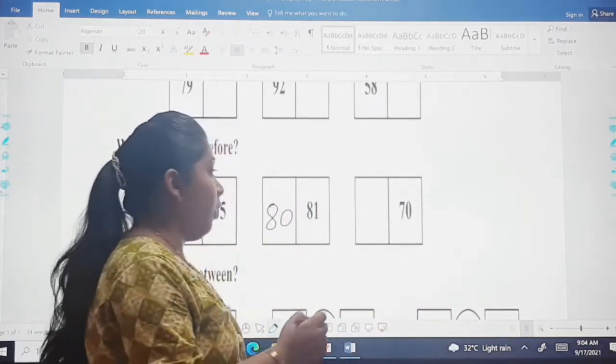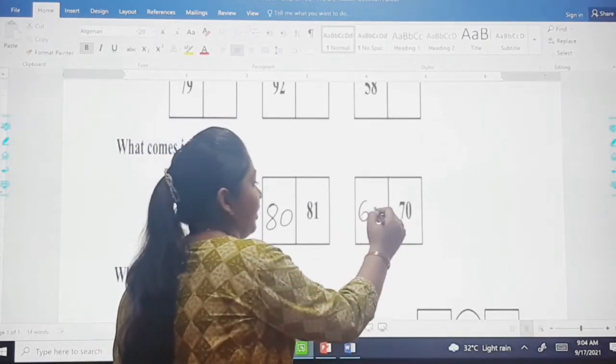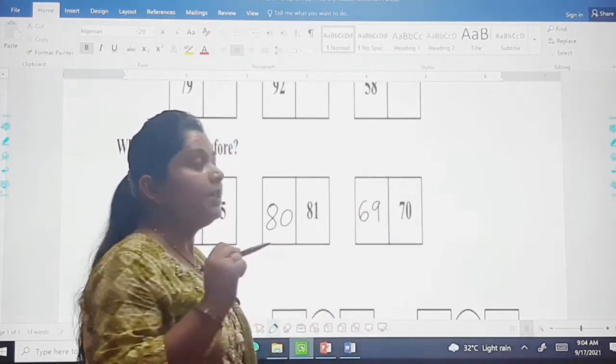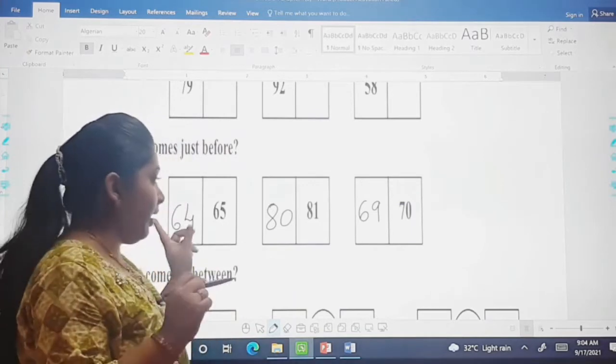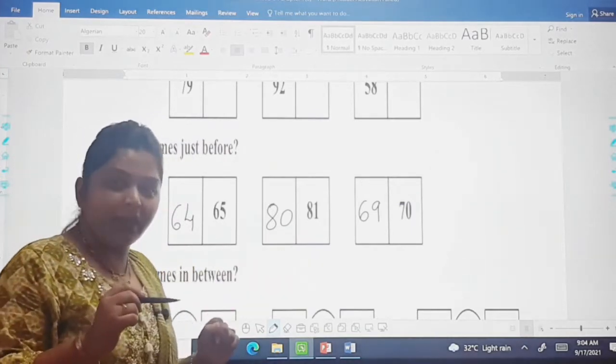Before 70, which number will come, dear children? That is your number 69. Are you all clear with this?